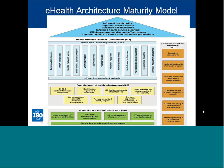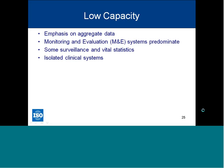Marion briefly shows examples of low, medium, and high capacity using an example that came out of Rwanda in the earlier stages of the project. Low capacity, as elaborated in each document section, means more focus on aggregate data, monitoring and evaluation, surveillance, and vital statistics, with either isolated clinical systems or none as recognized in the North American and Western context.